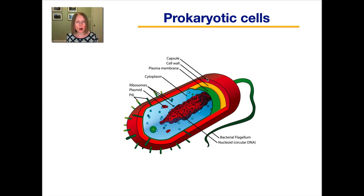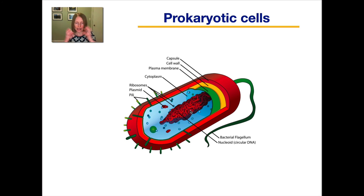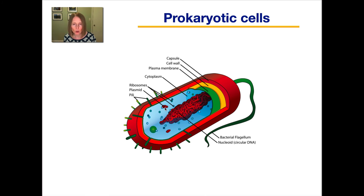Some prokaryotes, but not all, have another layer outside of that called the capsule, which can help them stick to surfaces or to each other. Then we have that internal gel-like fluid, the cytoplasm or cytosol. In red we have the DNA — in prokaryotes, they have a circular DNA, like a giant circle that gets mushed up and coiled together. There's no specific structure surrounding the DNA, but it's in a specialized region of the cytoplasm often referred to as the nucleoid. Many prokaryotes also have small circular DNA molecules referred to as plasmids, and you will learn more about those later.